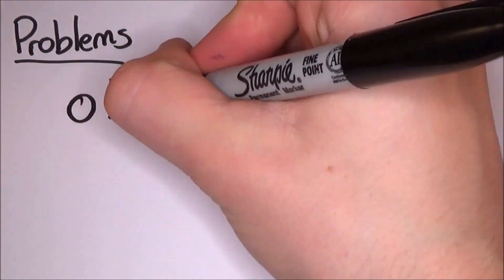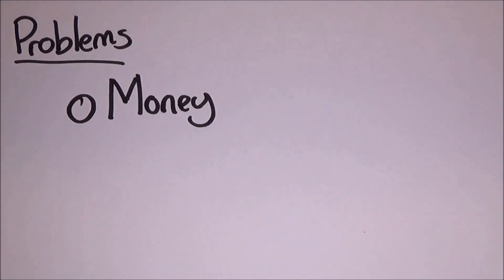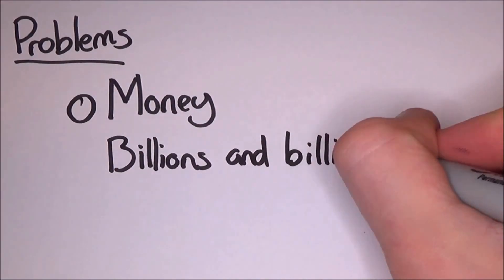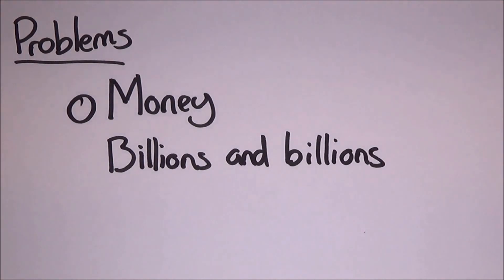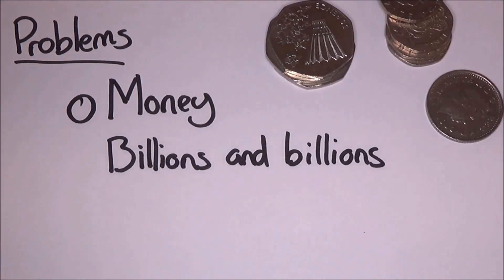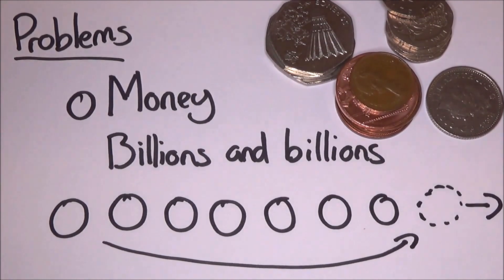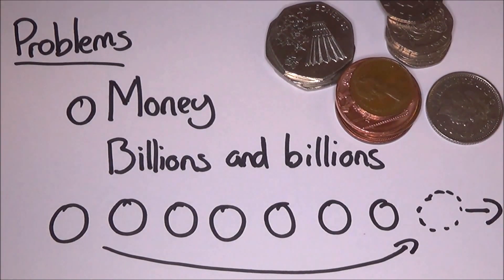But as I have said before and I will say many times again, like everything in science there are always problems. However, the main one for this is actually money. It costs billions of dollars to make the chips smaller, and we are approaching that point where it is so small that electrons can start behaving quantumly and quantum jump their way through transistors.